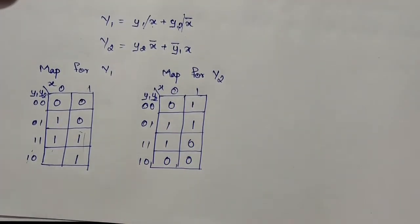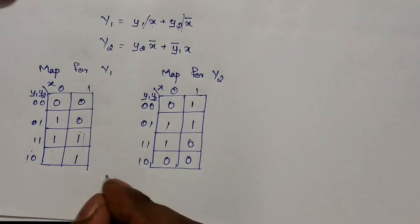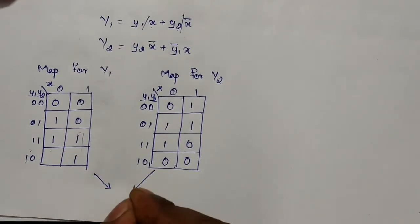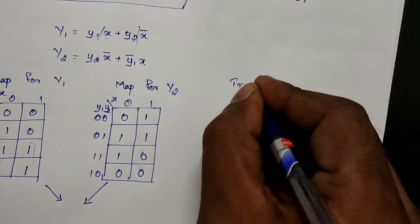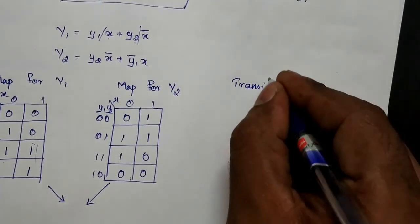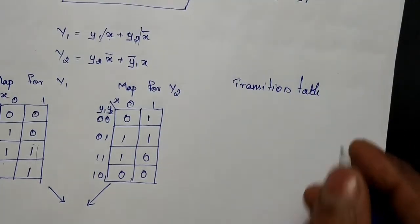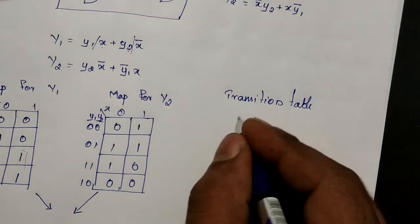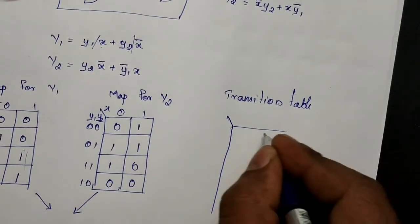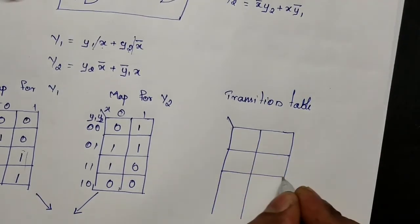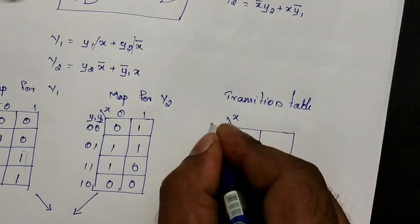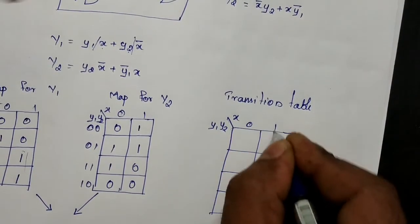Now we need to go for the transition table. The transition table is nothing but a combination of the Y1 and Y2 maps together covering all the cases.